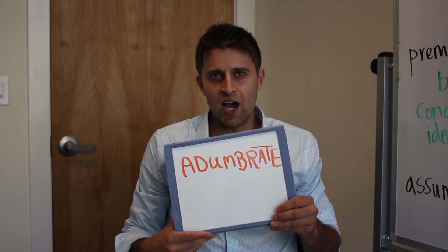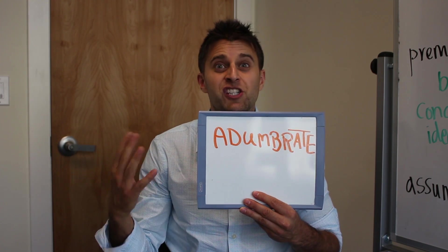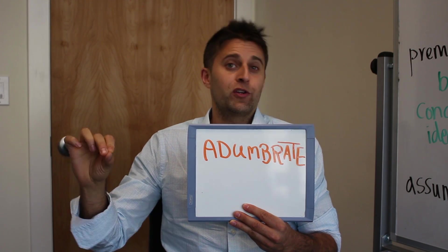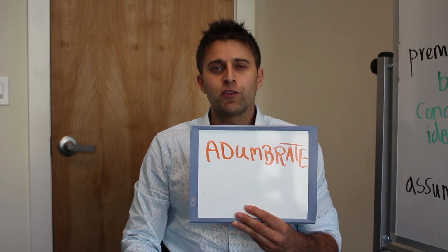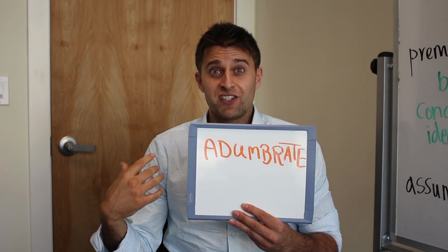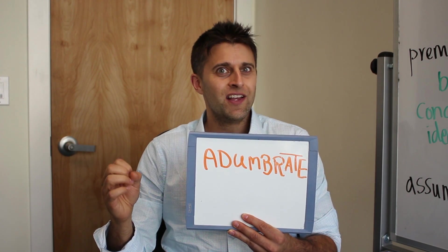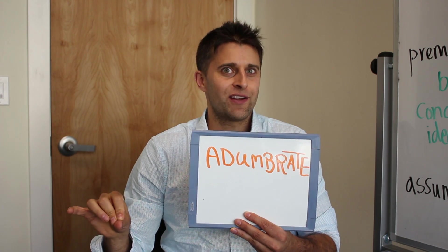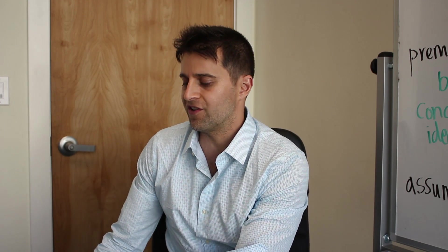Next we have adumbrate. It comes from the Latin umbra, which means shade or shadow. To adumbrate, we have two definitions. One is just to kind of outline and say this is what we're going to do today — let me adumbrate or sketch out what we will do. It can also mean to foreshadow. So oftentimes when we're watching TV shows and the finale is drawing close, they'll foreshadow or adumbrate what will happen to the main character. Not as common a word as the other two, but two definitions are important to know.